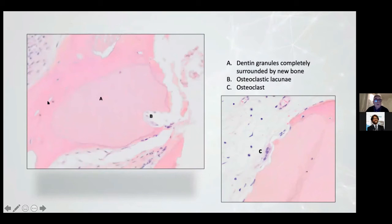Here there is an osteoclast eating the dentine. The same thing in this image: this is a multi-nucleated osteoclast able to restore the surface of the granule.